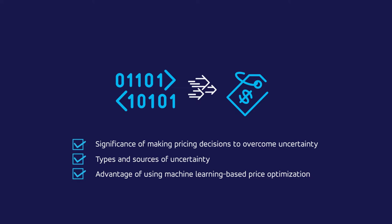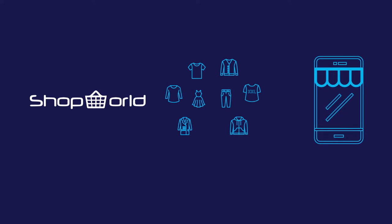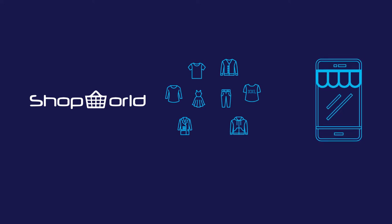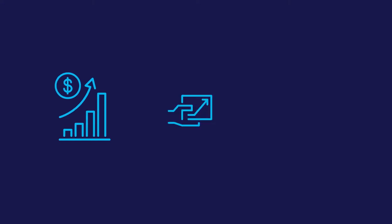Let's begin with a business scenario. Shopworld is an international fashion retailer based in the US. The retailer is famous for its monthly new collection, featuring apparel for men, women, and kids. Shopworld's sales channels include its stores and website. Although the business was making profits, Shopworld observed that it could achieve better results.